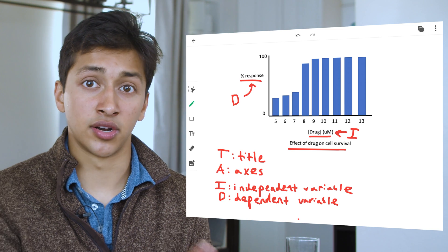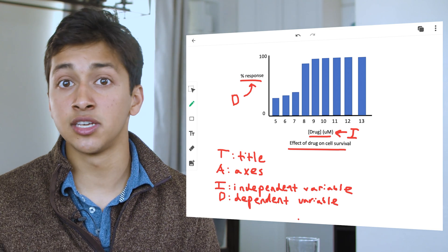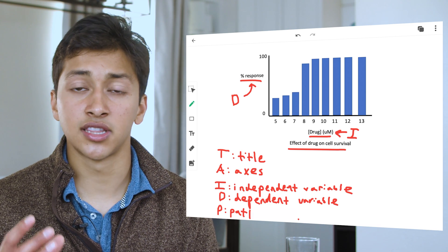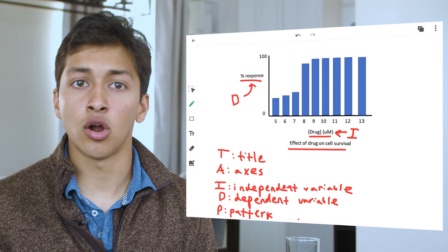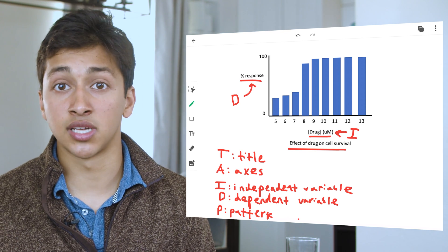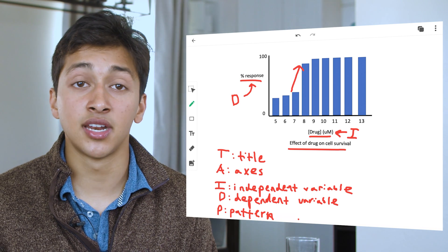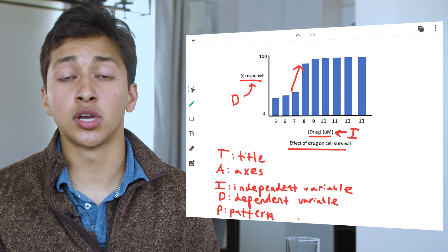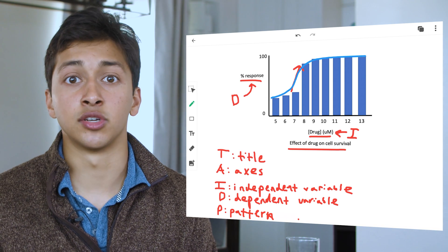The dependent variable, on the other hand, is shown on the y-axis, so we know that drug response is our dependent variable. Finally, let's look at the patterns, or P, component of the TAIDP method. Are there any patterns in this curve? At what drug concentration do we see the greatest percentage response? There seems to be a sharp transition between 7 and 8 micromolar, in that drug concentrations above 8 micromolar lead to a favorable percent response.